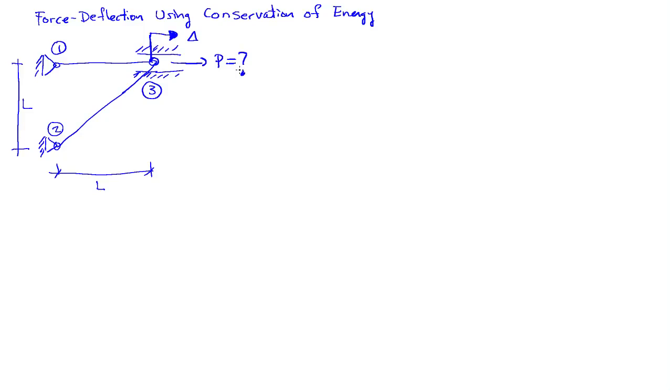I'm going to approach this problem using conservation of energy. In this case, the work in is going to be equal to the work stored. The work stored is the strain energy in the truss bars. The work in, in this case, is going to be one-half P times delta. P is my unknown, delta is given. I'd like to use this relationship of conservation here.